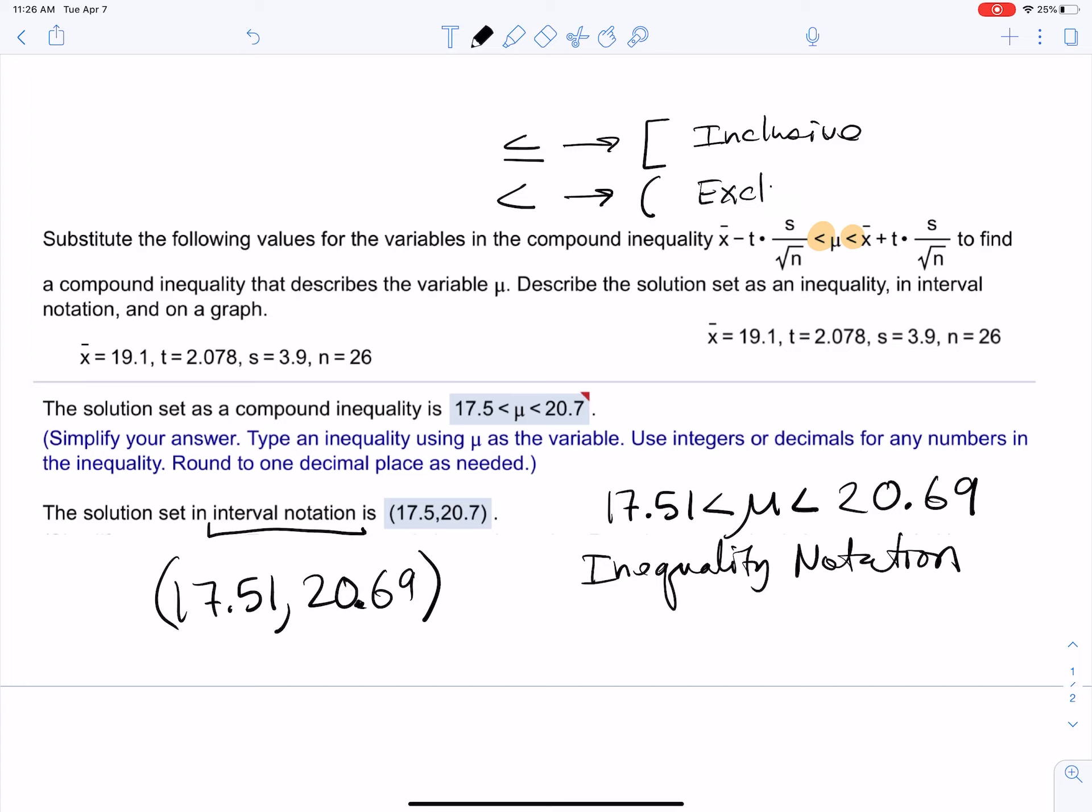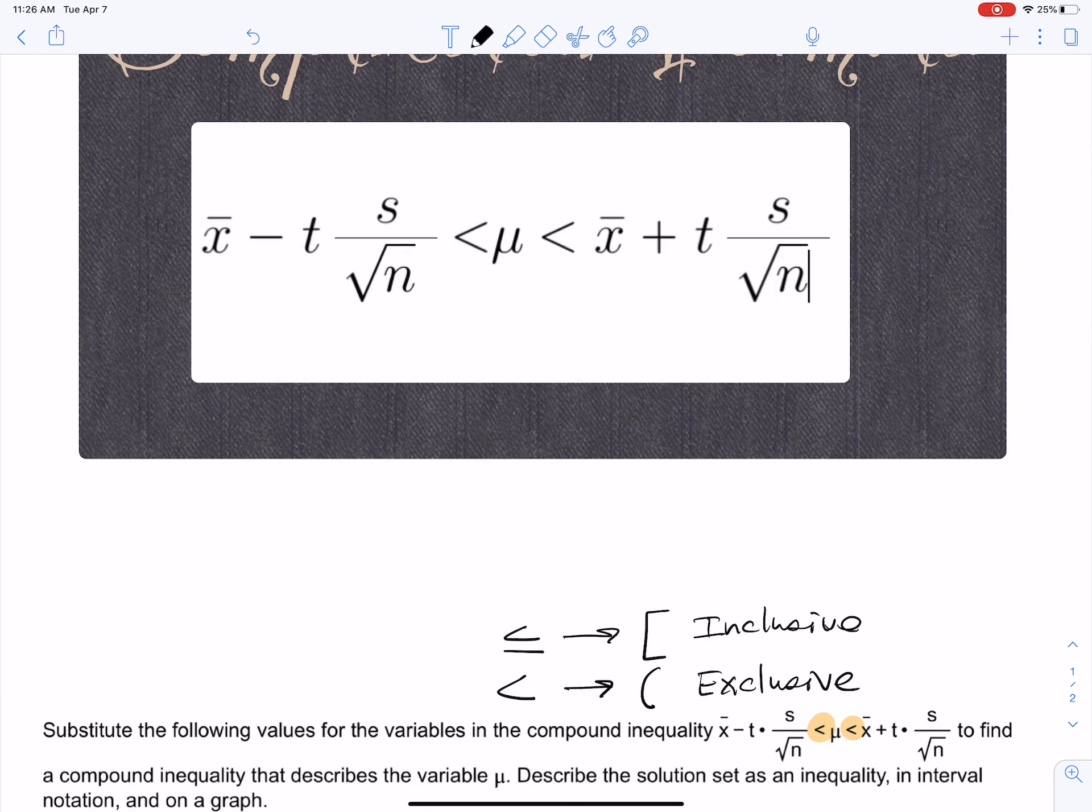We call this inclusive if we want to include the endpoint; this we call exclusive. Alright, so that's just a little bit about notation. Another thing about this inequality: this right here is something in statistics dealing with the margin of error for a confidence interval. This is basically like the left endpoint and the right endpoint of a confidence interval.